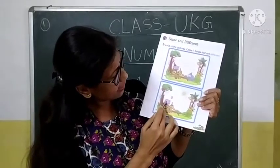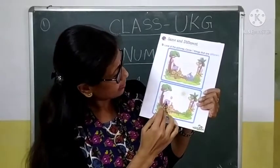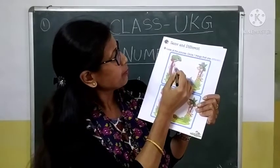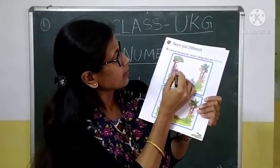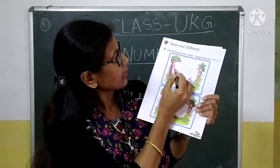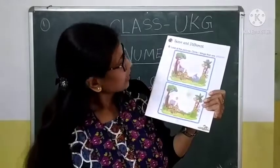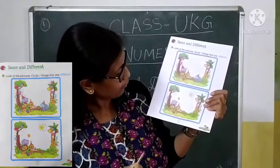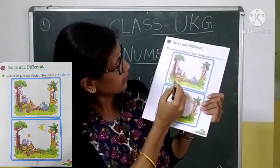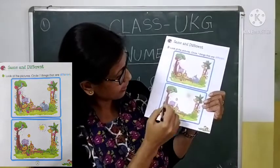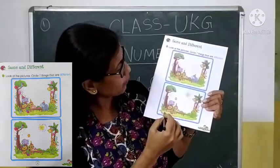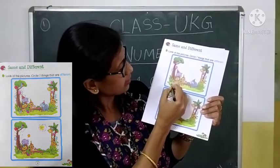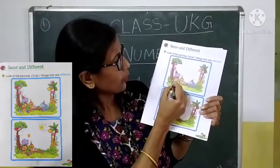Then see this elephant — this elephant has a cat. Circle this one. Then one more different. See this bird. Here it is bird. Here no bird. Circle this one.